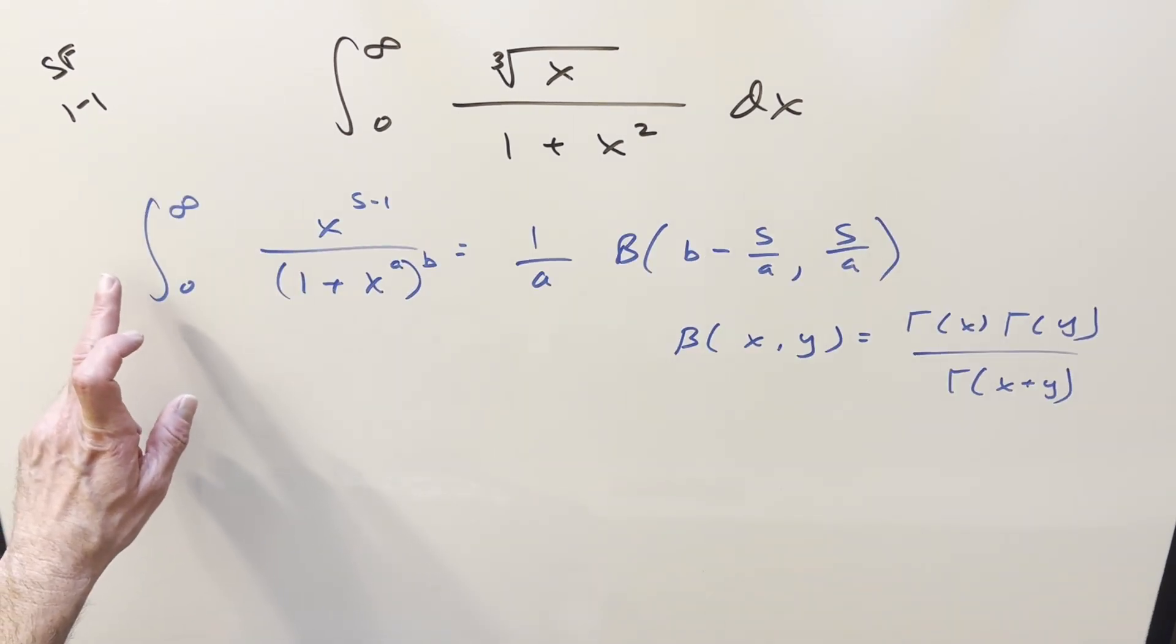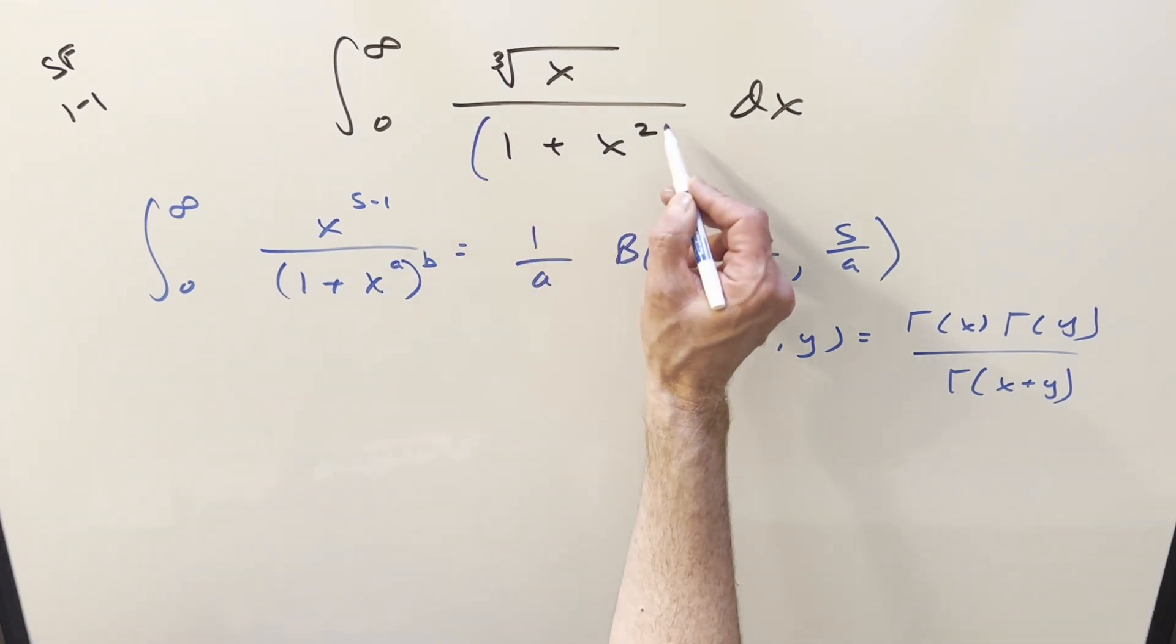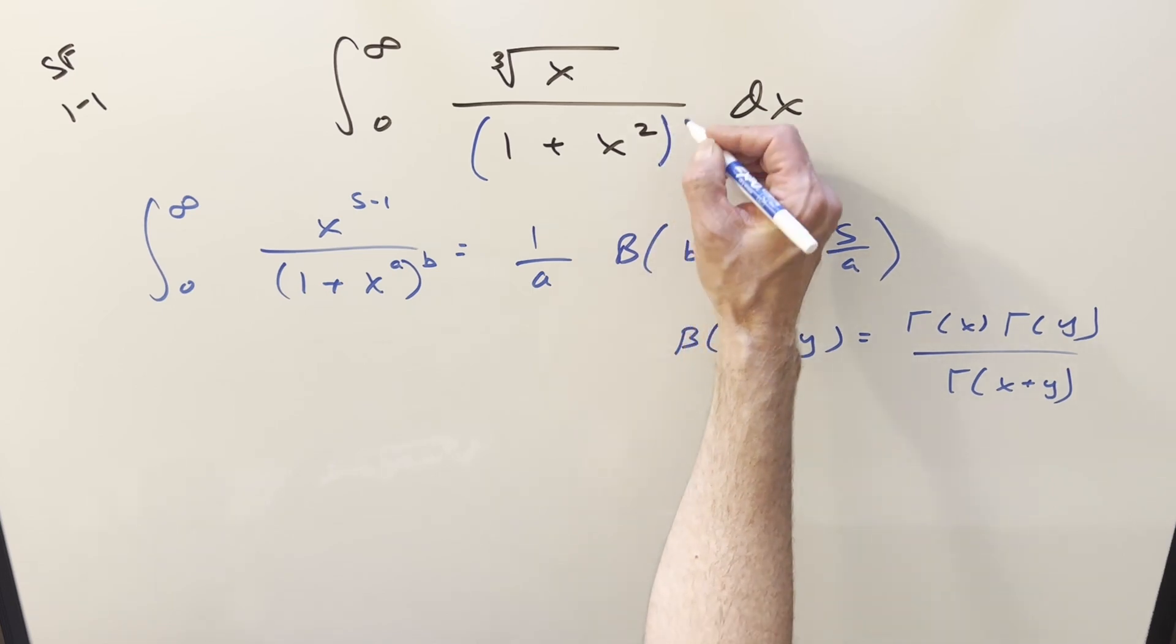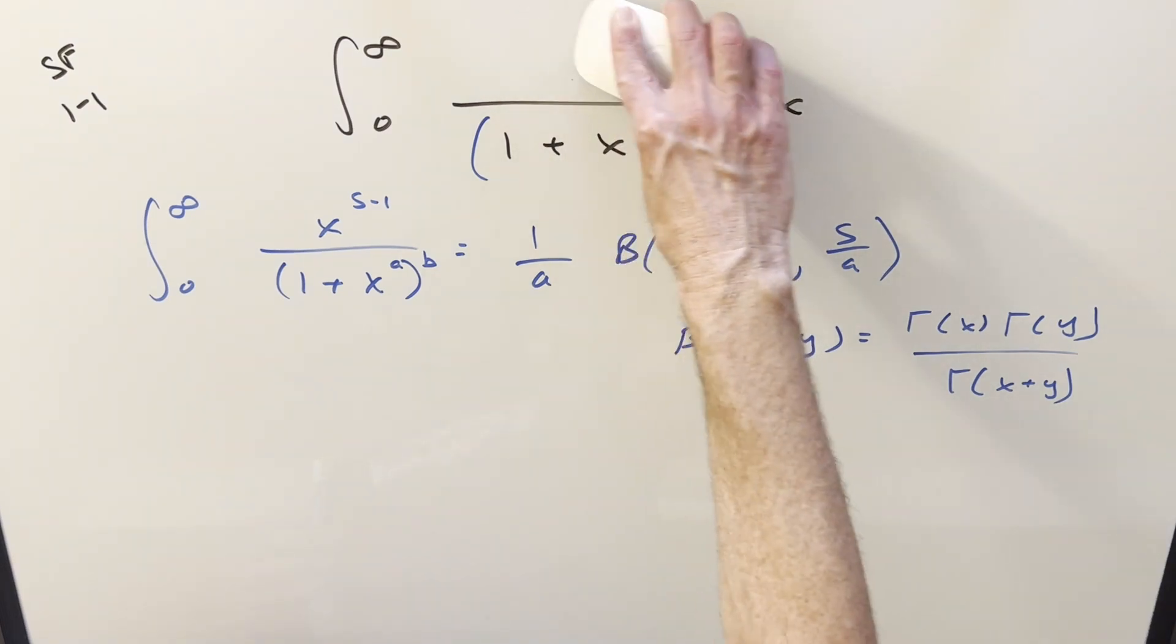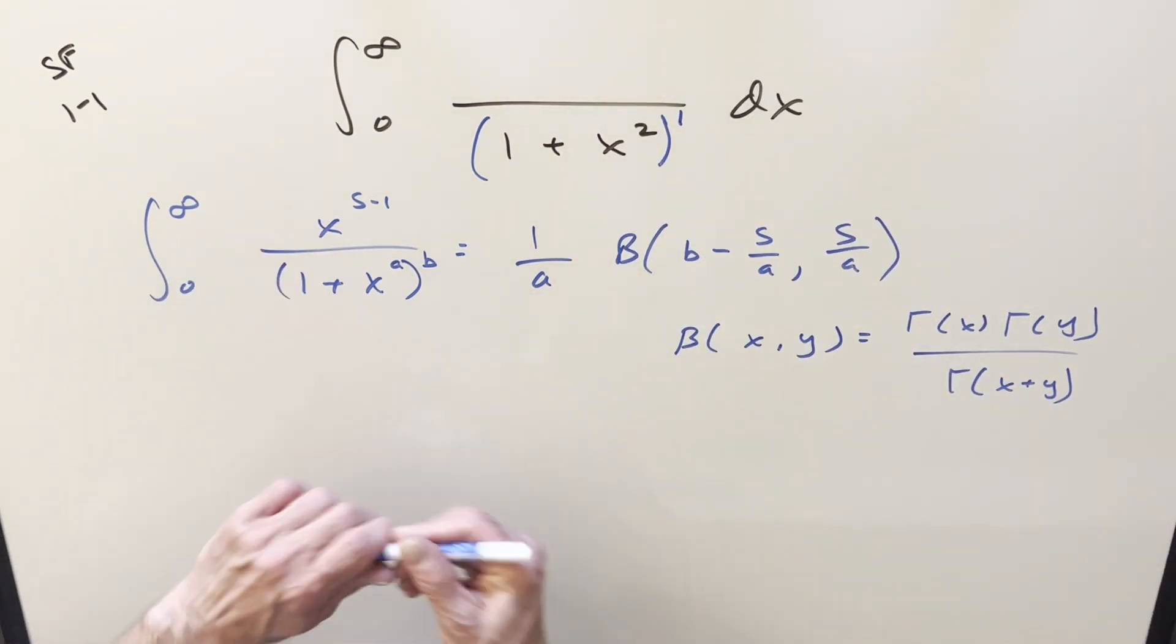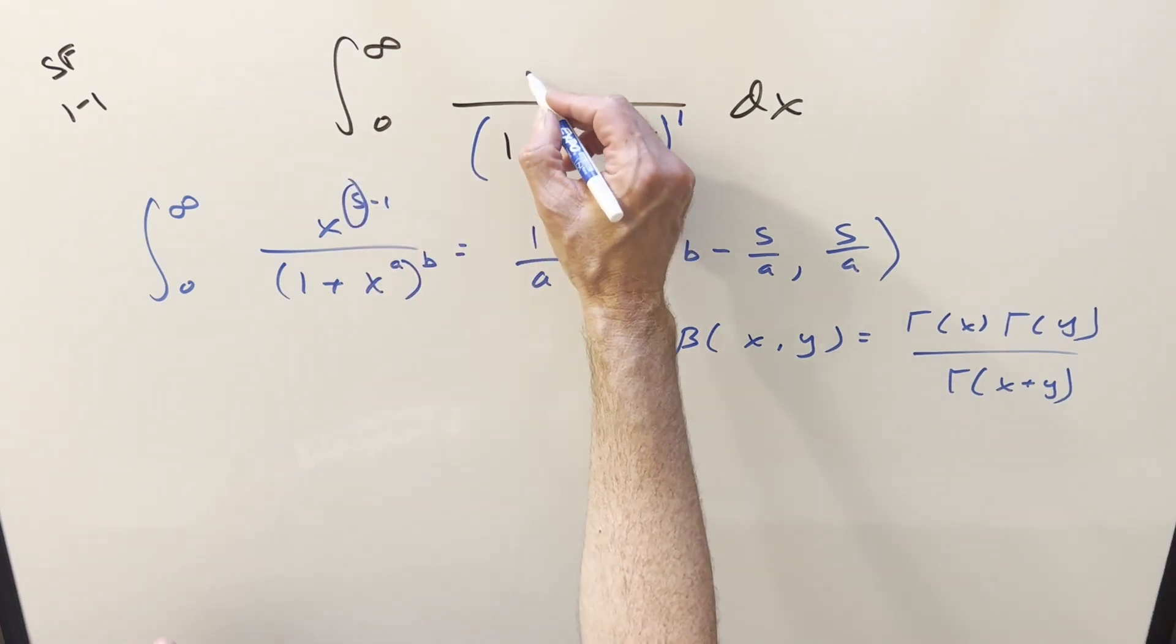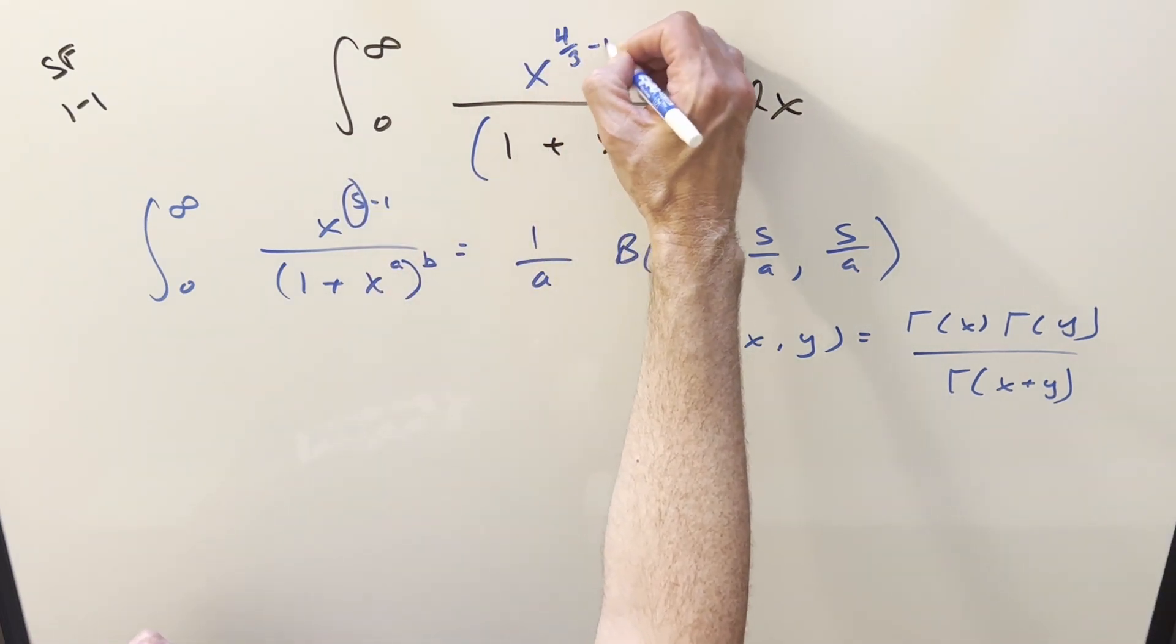So now we have our formula on the board and we notice we're basically in the right form. What we have for the formula is a little more complicated. If you look at it in our problem, we could look at it as having an exponent right there, a one. For the cube root of x I can just rewrite that and put it as x to the one-third. But what I really want for this to get an s value is I'm going to write it as x to the four-thirds minus one.